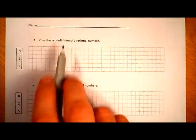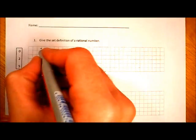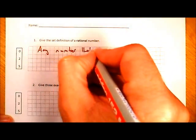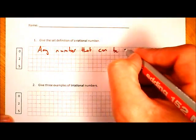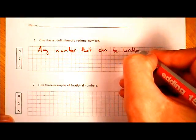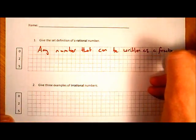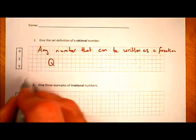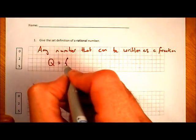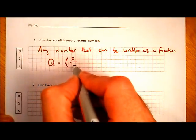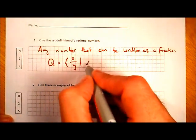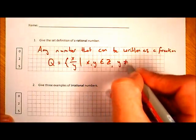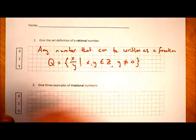First question: give the set definition of a rational number. A rational number is any number that can be written as a fraction. The symbol for rational numbers is Q. So Q equals X over Y, where X and Y are both integers, and Y cannot be zero. That's the set definition of a rational number.